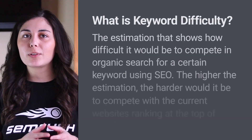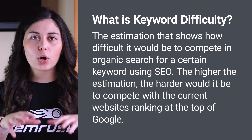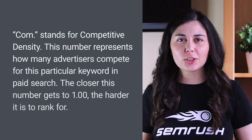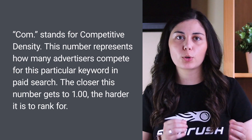Keyword difficulty is an estimation of how hard it would be to outrank the current websites that are ranked for a particular keyword in Google's top spots. Competition level is the density of advertisers using a particular keyword for their ads. This metric usually refers to paid search, but it can also be representative of what is happening in organic search. When you make your reports, always make sure that your files have two columns for these specific metrics.